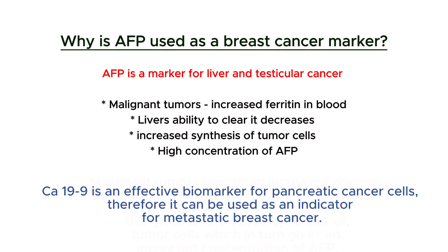Malignant tumors lead to an increased release of ferritin due to tumor infiltration and necrosis. This reduces the liver's ability to clear it, giving an increased synthesis in tumor cells, which in turn gives an increased concentration of AFP. Therefore, AFP is valuable for breast cancer.